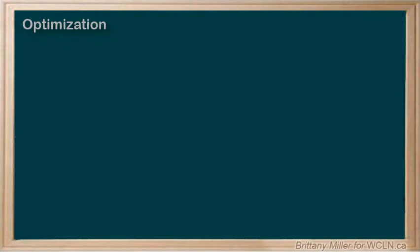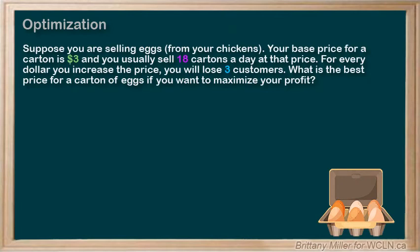Let's go over one more example. Suppose you are now selling eggs from your chickens. Your base price for a carton of eggs is $3, and you usually sell 18 cartons a day at that price. You've experimented with raising and lowering the price in the past, and your data shows that for every dollar you increase the price, you lose three customers. So what is the best price for a carton of eggs if you want to maximize your profit?